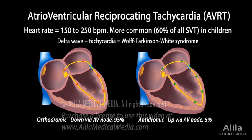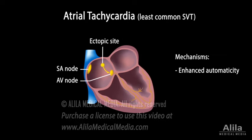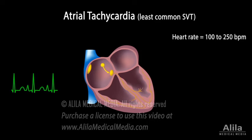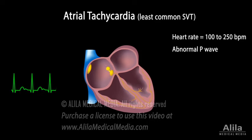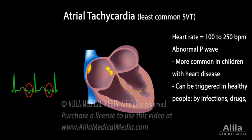AVRT is more common in children. Atrial tachycardia is caused by an ectopic focus in an atrium and can arise from any of three mechanisms: enhanced automaticity, re-entry, or triggered activity. Ventricular rhythms are regular and fast. P-wave morphology varies depending upon the site of origin and tachycardia mechanism. Atrial tachycardia is common in children with congenital heart disease, but it may also be triggered by environmental factors in healthy people.